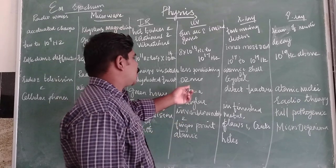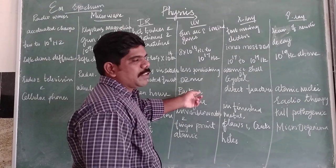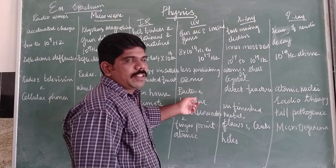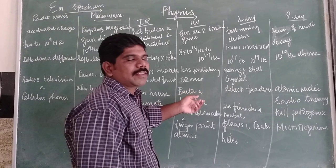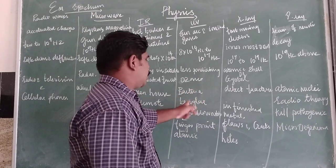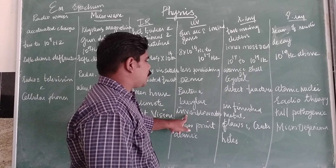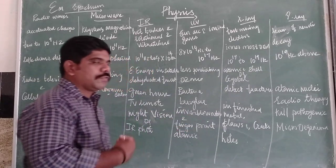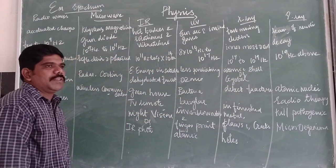Ultraviolet rays are used to destroy bacteria from surgical instruments, so they act as a sterilizing agent. They are also used to find invisible markings, detect forgery in documents, and to study atomic structure.